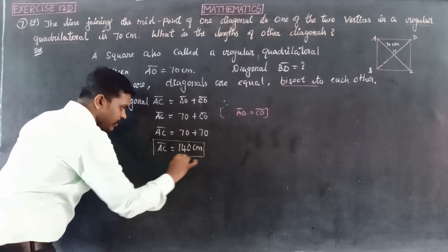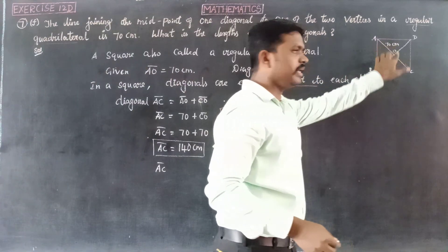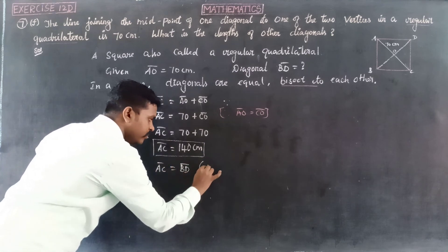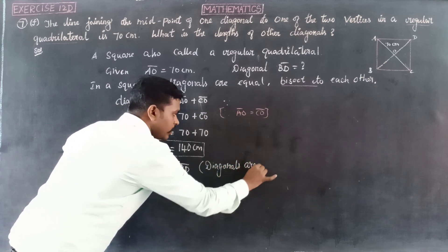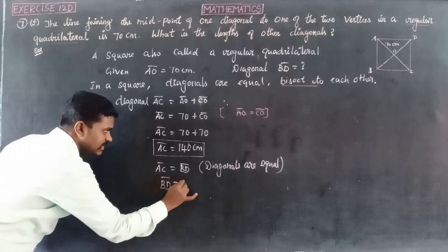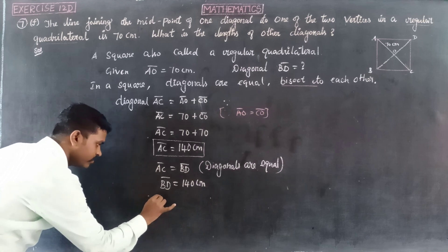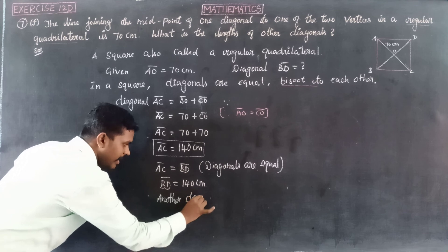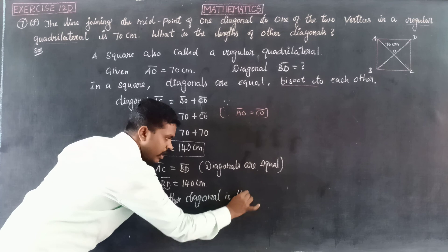So diagonal AC equals 140 cm. Since the diagonals of a square are equal, diagonal BD also equals diagonal AC. Therefore, the length of the other diagonal BD is 140 centimeters. Thank you.